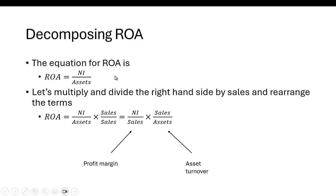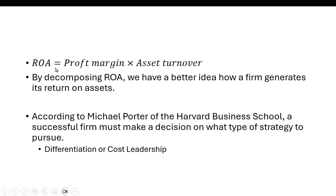How do you decompose return on assets? The formula is net income over assets, but let's multiply it by sales over sales — they just cancel, so you're just multiplying by one. It seems like a little mathematical trick, but you rearrange the terms, so now you have net income over sales, which is profit margin, and sales over assets, which is what we call total asset turnover. That tells us how well you use your assets to generate sales — it's a measure of efficiency. So return on assets equals profit margin times asset turnover.